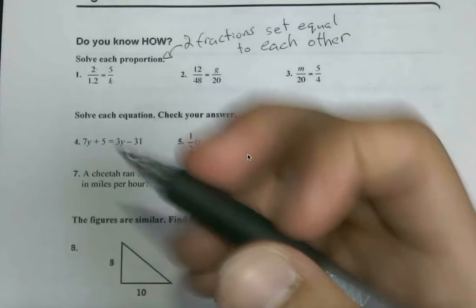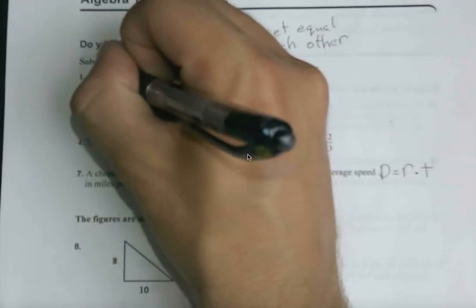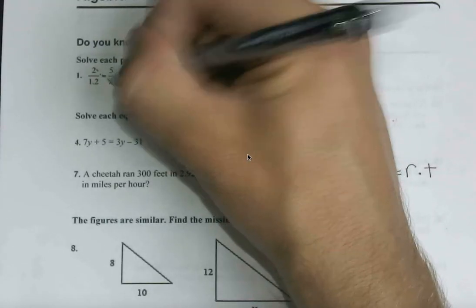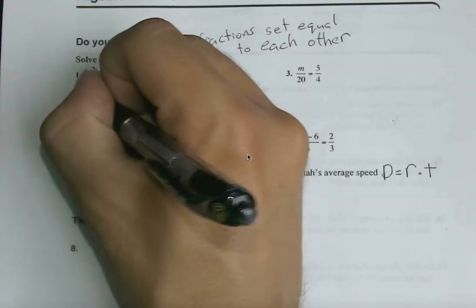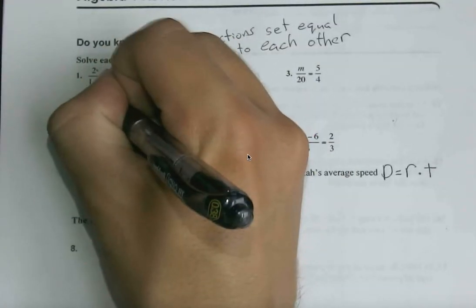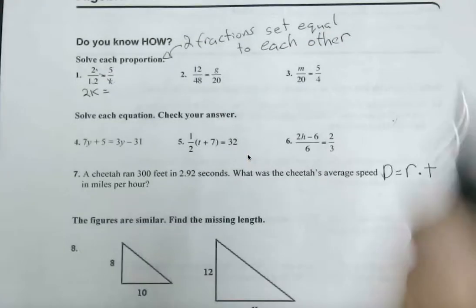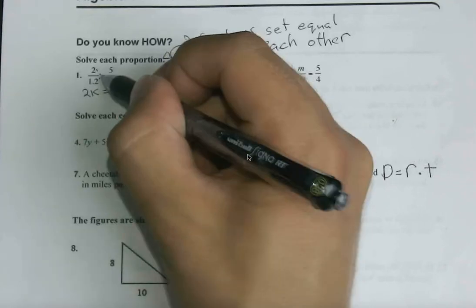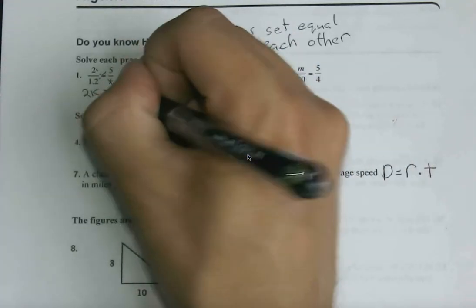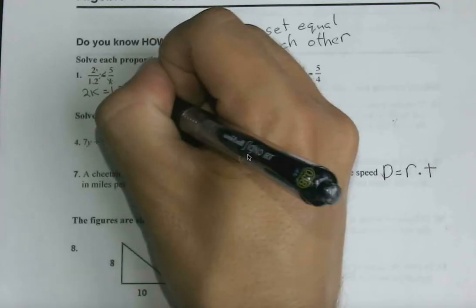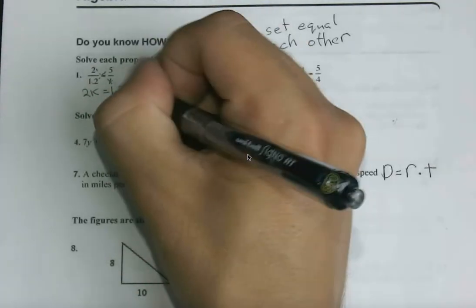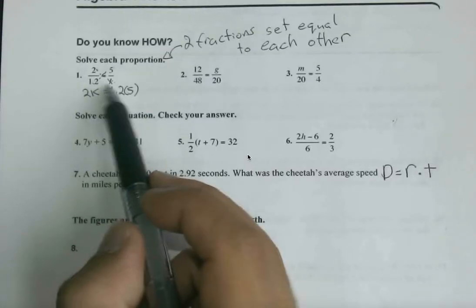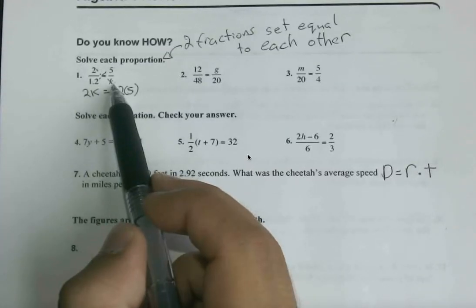So when we say cross multiply, we're multiplying this numerator of 2 with this denominator of k, even though it's a variable. So this would be 2k, just like the video game series. If we then multiply 1.2 with this 5, we have 5 times 1.2.